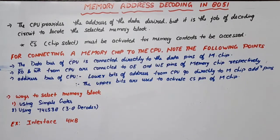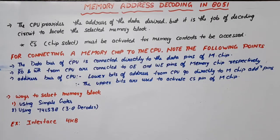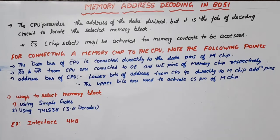In this video lecture on 8051, I'm going to discuss memory address decoding. If a controller wants to read or write data from memory, the address is sent by the CPU, but the address of a particular location is selected by the decoding circuit. There is an important pin called chip select, CS bar — this is an active low signal, also called CE bar (chip enable). CS bar must be activated for memory content to be accessed.